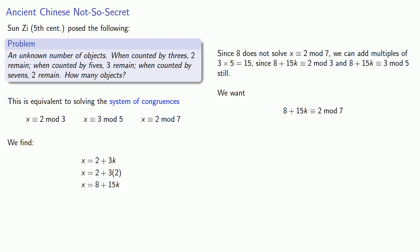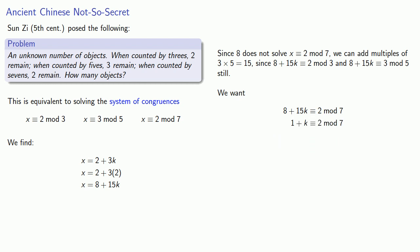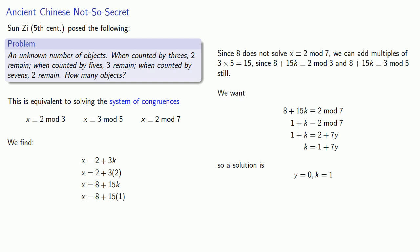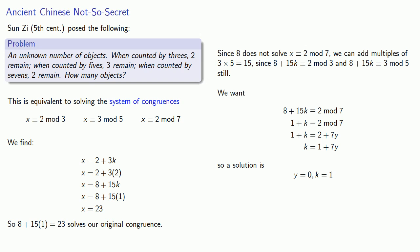Since we're working mod seven, remember working mod n means you never have to work with numbers larger than n, so we can actually reduce some of our coefficients. One plus k congruent to two mod seven means that one plus k is two more than a multiple of seven, and we can solve this. As long as y is an integer, k will also be an integer, so we can pick y equals zero, in which case we find k equals one. And so the solution we need, eight plus fifteen times one, that's twenty-three, and this solves our original congruence. A useful thing to keep in mind is that since our moduli are three, five, and seven, if we add a multiple of three times five times seven, we don't change any of the congruences. And so twenty-three plus three times five times seven times k also solves the congruence.